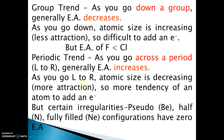As we go from left to right, atomic size decreases, meaning there is more force of attraction between the nucleus and the incoming electron, so more tendency of an atom to add an electron. But certain irregularities exist — pseudo-filled, half-filled, and fully-filled configurations have zero electron affinities.